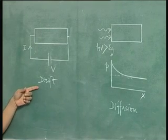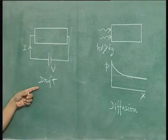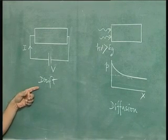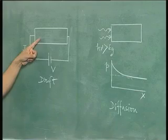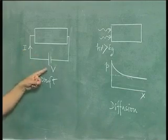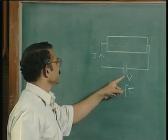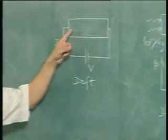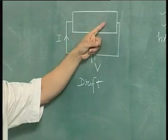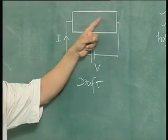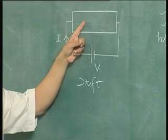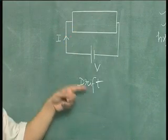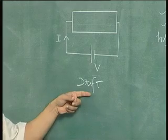This is an example of the drift transport. Here, to a semiconductor sample a voltage has been applied which results in a current. The flow of current in the semiconductor in this case is due to drift.